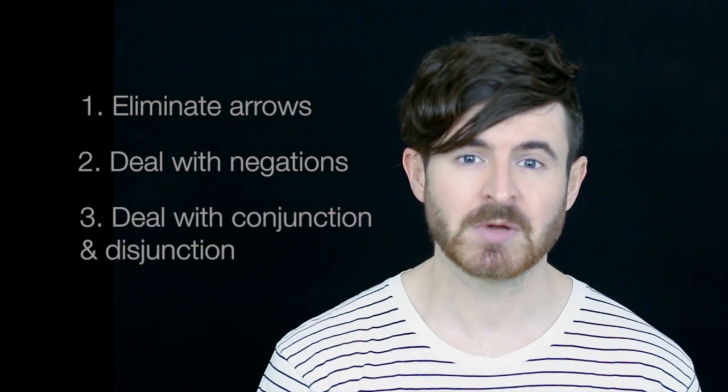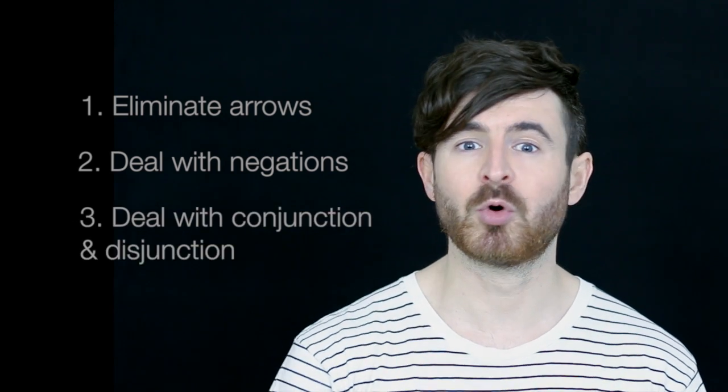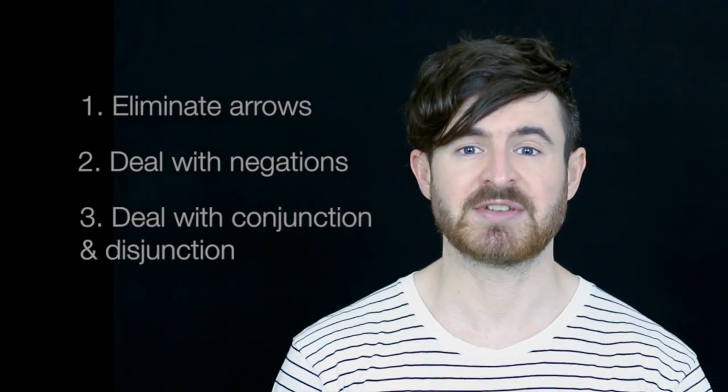But here's the feature that makes that really interesting. Any sentence in propositional logic can be transformed into a sentence in disjunctive normal form. So we can take any sentence, transform it into disjunctive normal form, and read off valuations that make that sentence true, if there are any. We do it in three steps. First, we deal with arrows. Then we deal with negations. And then we deal with the order of conjunctions and disjunctions.